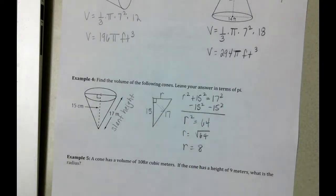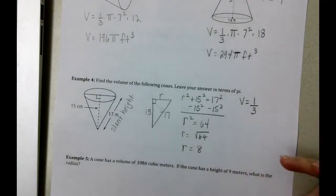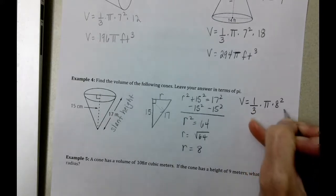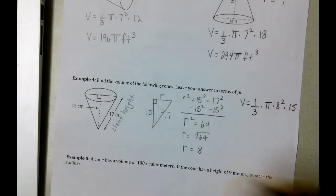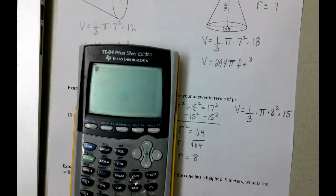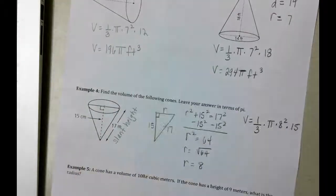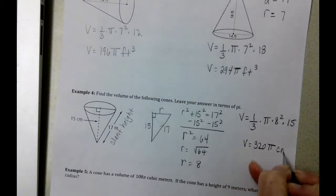Now that we know that, we can fill in our volume, or fill in those values to find the volume. It's going to be 1/3 times pi times 8 squared times 15, radius times height of the cone. So 1/3, don't have to type in pi, so times 8 squared times 15, and we get 320 pi centimeters cubed.